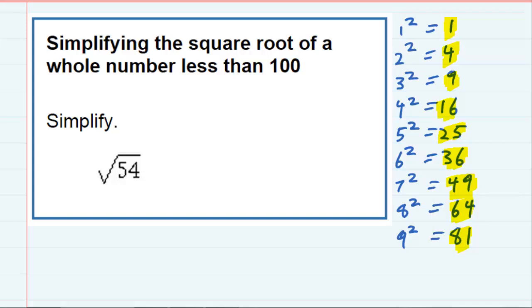So the question becomes, can I rewrite the square root of 54 as two numbers being multiplied where one of those numbers is a perfect square?